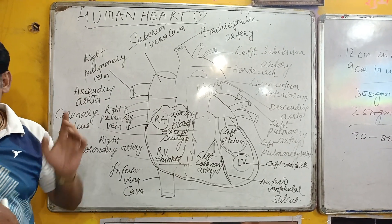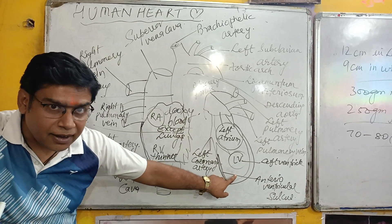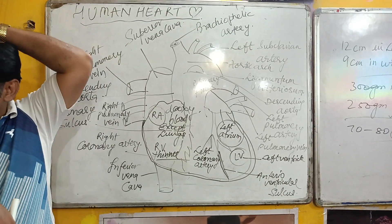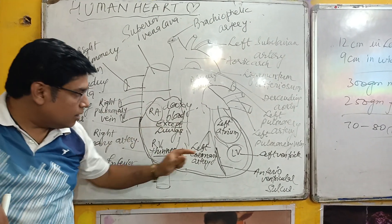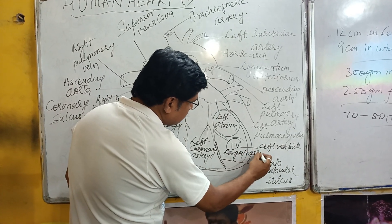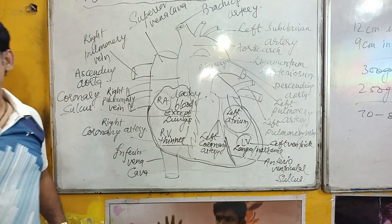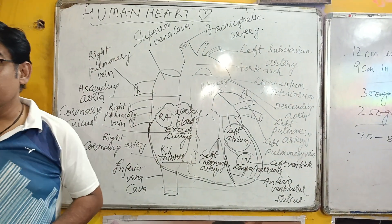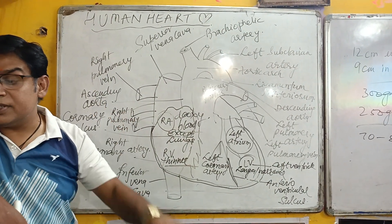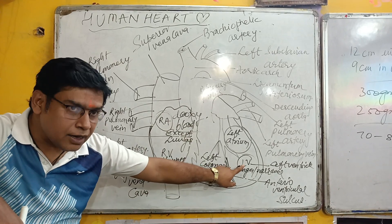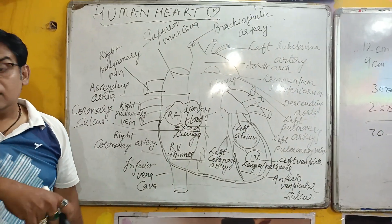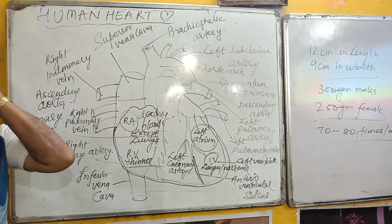The left ventricle is longer and narrower than the right ventricle, and its wall is three times thicker than that of the right ventricle.